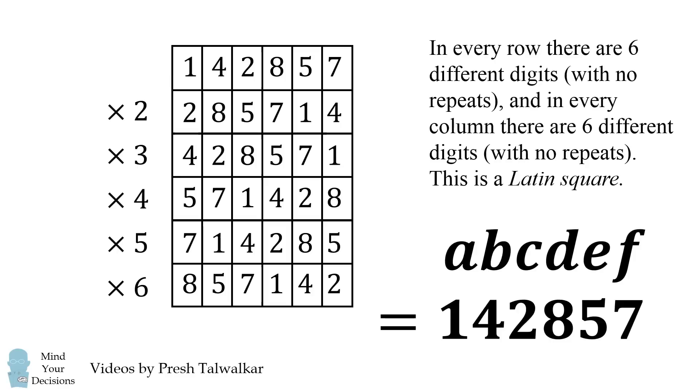ABCDEF is equal to 142857. And I'm pretty sure this is the only solution to this puzzle, because this is the only six digit cyclical number in decimals which doesn't have a leading zero. But I leave it open to you if you can find any other possibilities, or prove why this is the only possibility.